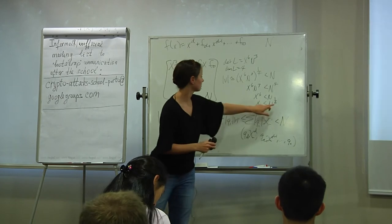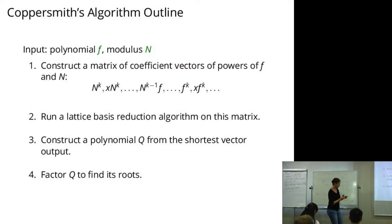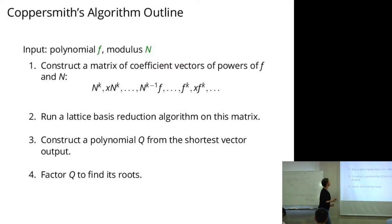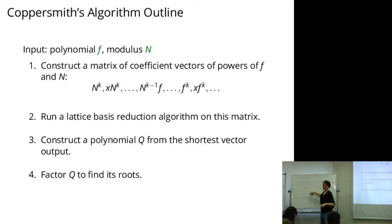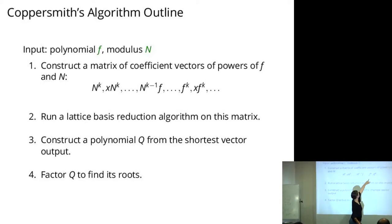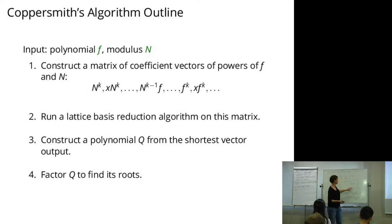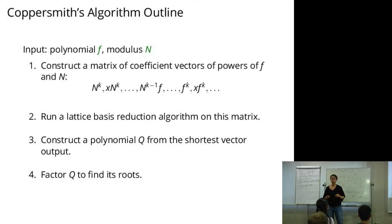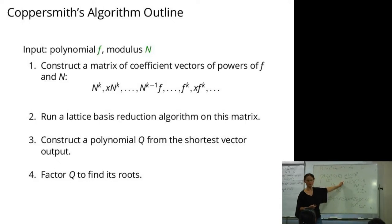We only have a cubic polynomial here. What Coppersmith is doing — or how Howgrave-Graham and Alexander May phrased it — is to take higher powers of n and fill out a much larger lattice with extra powers of f and x. This gives a better ratio of determinant to dimension, getting the bound down to x < n^{1/3}. But with this stupid little calculation using a dimension-4 lattice, we can already do pretty well — good enough for our purposes.